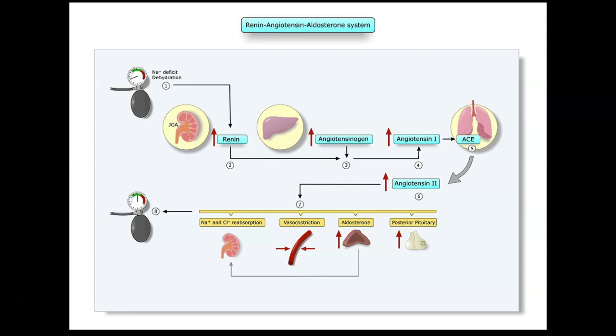This diagram illustrates the renin-angiotensin-aldosterone system, putting all of these things together. Starting with a sodium deficit or dehydration, that stimulates renin, which stimulates angiotensin 1. Angiotensin converting enzyme in the lung converts it to angiotensin 2. Angiotensin 2 then causes sodium and chloride reabsorption, vasoconstriction, and increased aldosterone production — all working to raise blood pressure.